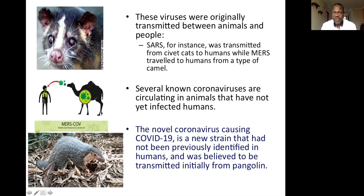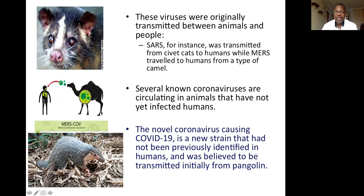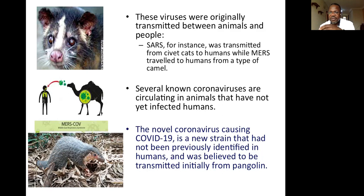These coronaviruses were originally transmitted between animals and people. SARS was transmitted from a civet cat to humans, while MERS was transmitted to humans from a type of camel. The novel coronavirus causing COVID-19 is a new strain not previously identified in humans and was believed to be transmitted from pangolin. The initial infection was from animal to humans, and after that, transmission occurred between humans.